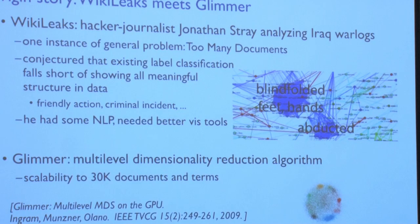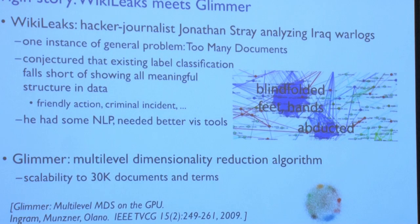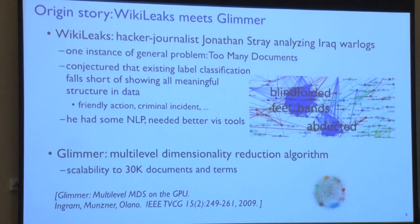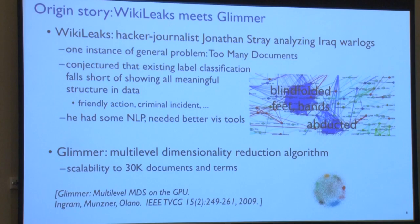The origin story of this system is basically WikiLeaks meets Glimmer. I met Jonathan about six years ago, and he was really my entree into the problems of journalism — the first person I met who really had two hats of a computational person and a journalist. He was analyzing the Iraq war logs from the WikiLeaks dataset — one instance of the very general problem of too many documents. His conjecture was that the Defense Department's labels on these incident reports didn't show everything there was to see in the data.